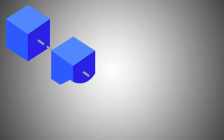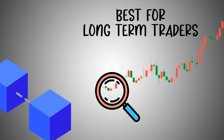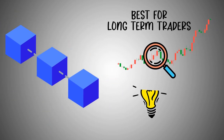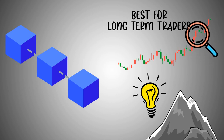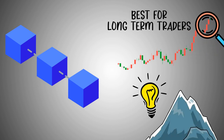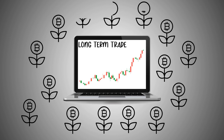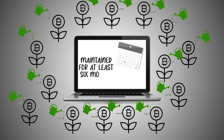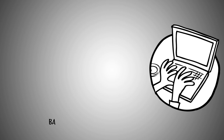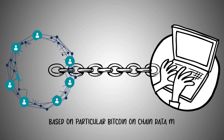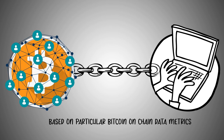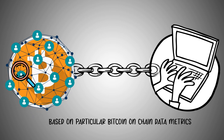The on-chain analysis appears to be best for long-term traders since it gives an in-depth idea of what's going on under the tip of the iceberg. Long-term trade refers to a crypto investment that is maintained for at least six months to a year. This model is based on particular Bitcoin on-chain data metrics that you can easily find on public ledgers or resources.